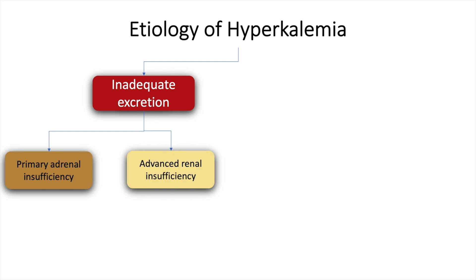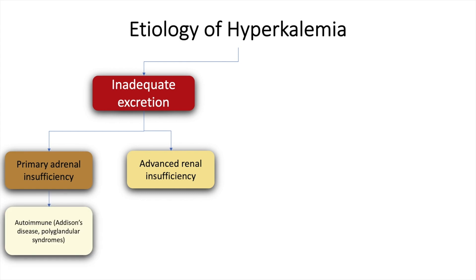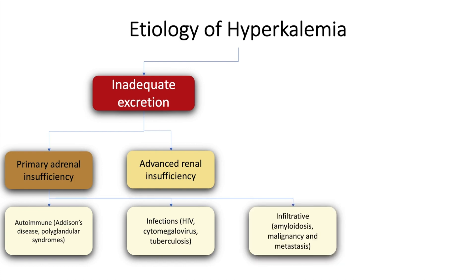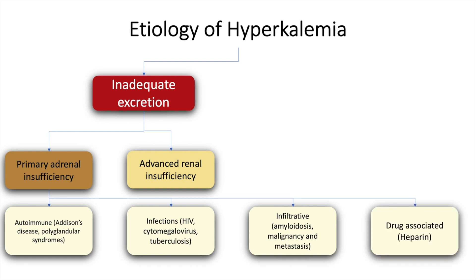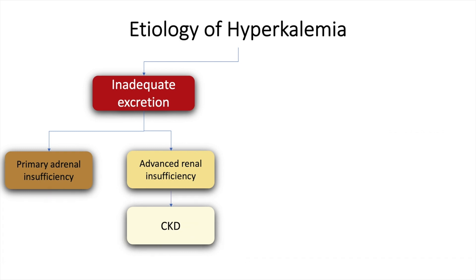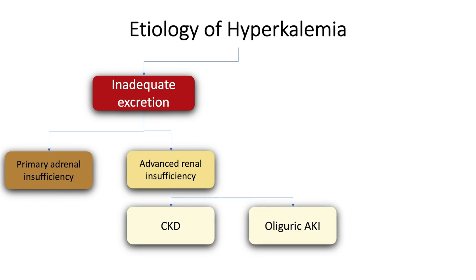Inadequate excretion of potassium may also occur due to primary adrenal insufficiency or advanced renal disease. Primary adrenal insufficiency may occur because of autoimmune conditions such as Addison's disease or polyglandular syndromes, infections such as HIV and CMV, infiltrative disorders such as amyloidosis, malignancy and metastasis, drugs such as heparin, and adrenal hemorrhage or infarction. Advanced renal insufficiency as seen in chronic kidney disease and oliguric acute kidney injury may also cause hyperkalemia.